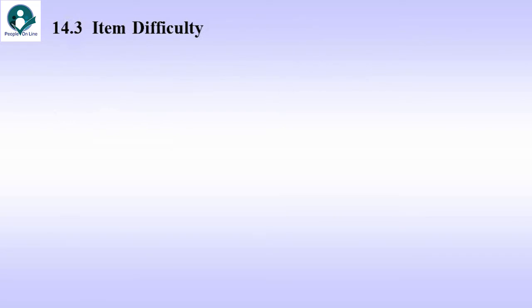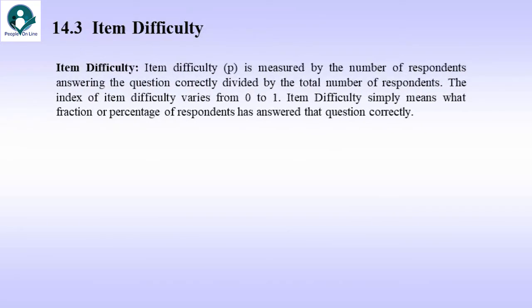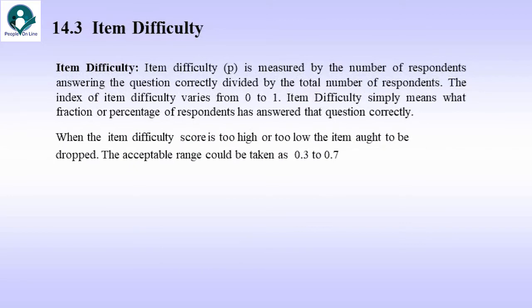Let's go to Item Difficulty. Item Difficulty is measured by the number of respondents answering the question correctly divided by the total number of respondents. The index of Item Difficulty varies from 0 to 1. Item Difficulty simply means the fraction or percentage of respondents who have answered the question correctly.